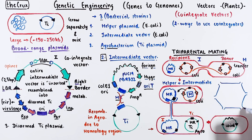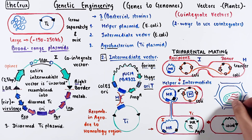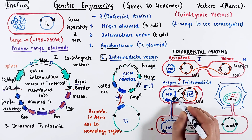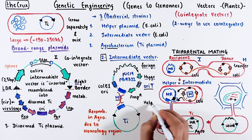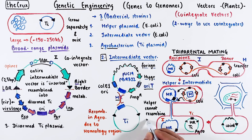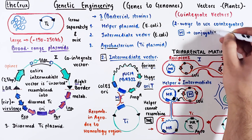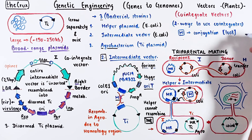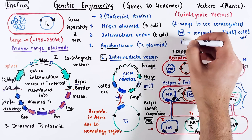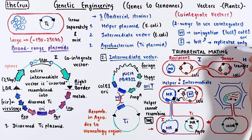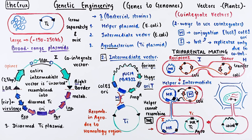This co-integrate containing Agrobacterium can be used to transfer the T-DNA into plants. The T-DNA contains the intermediate vector which has your foreign DNA inserted. The helper plasmid can do a conjugative transfer of itself into Agrobacterium, but the helper plasmid cannot recombine with the disarmed Ti plasmid, so it doesn't matter. The helper plasmid will eventually be lost because it has the ColE1 origin type, which is incompatible with Agrobacterium. The intermediate vector likewise will also be lost unless it integrates, and then it can replicate through integration in the Ti plasmid.